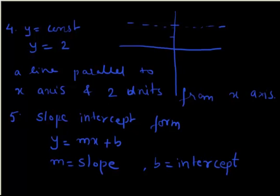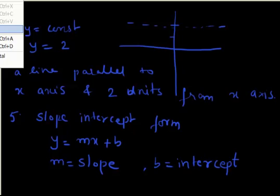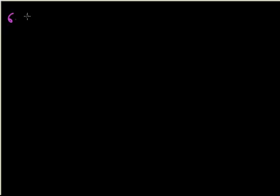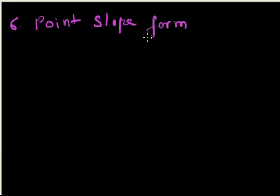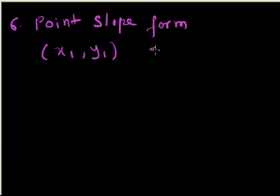The sixth form of a line is the point-slope form. The point-slope form means a line written which has been given a point and which has a slope.